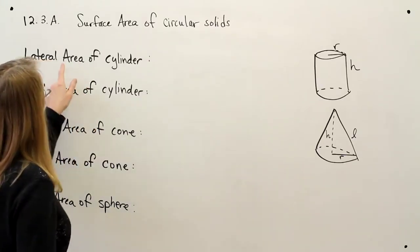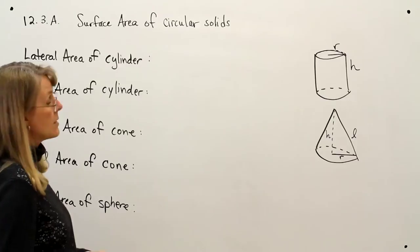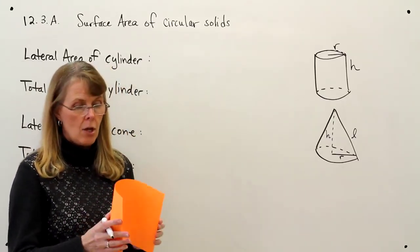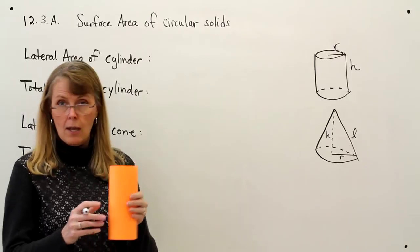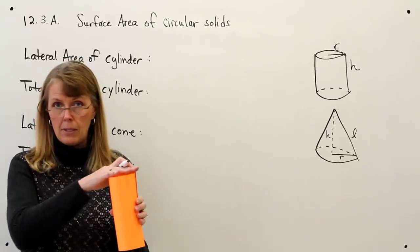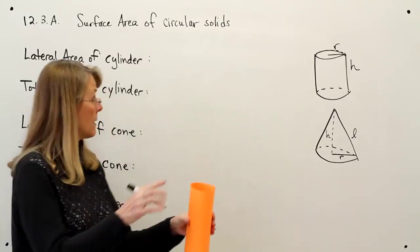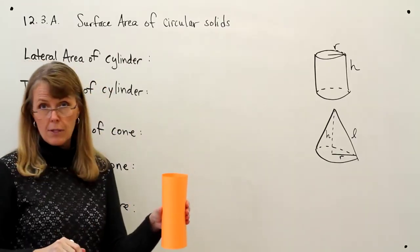So our first formula is the lateral area of a cylinder. We know lateral area means the area of the sides. So if we take a look at this cylinder right here, I'm not talking about the top or the bottom—notice they're empty—so this piece of paper represents the lateral area of a cylinder.